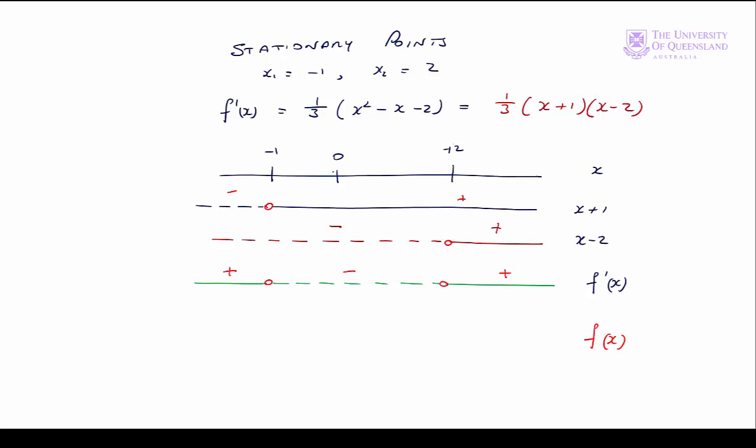Looking at what's happening to F(x) around the stationary points: around x = −1, F'(x) is positive to the left and negative to the right — so we have a local maximum. Around x = +2, the slope is negative below and positive above — so we have a local minimum. We see that the first derivative changes sign at the stationary points. Since the second derivative tells us how the first derivative changes, this leads us to think about a test involving the second derivative.